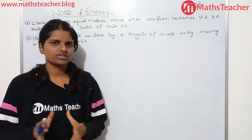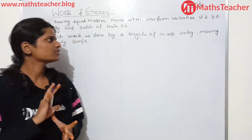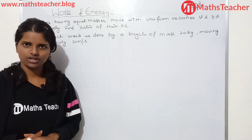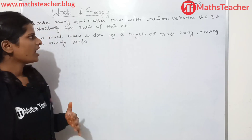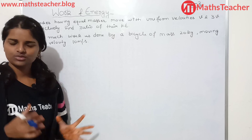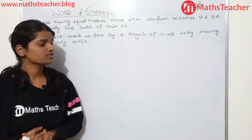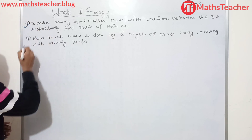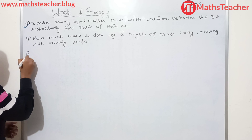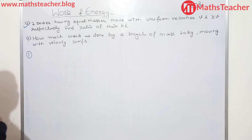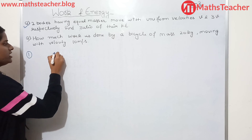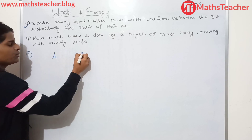Now let's solve some questions on kinetic energy. Question number 1: Two bodies having equal masses — body A and body B — move with uniform velocity V and 3V respectively.